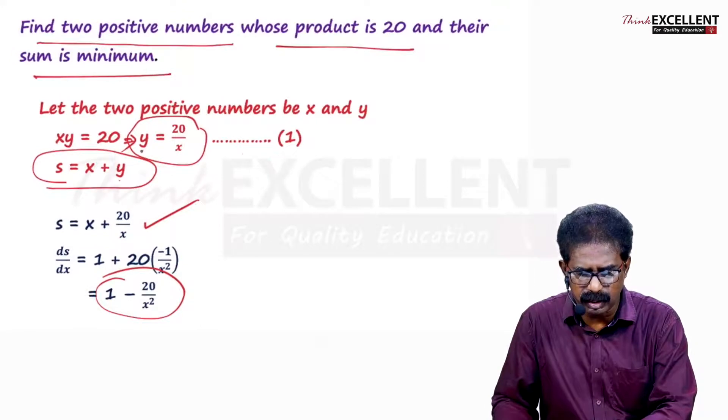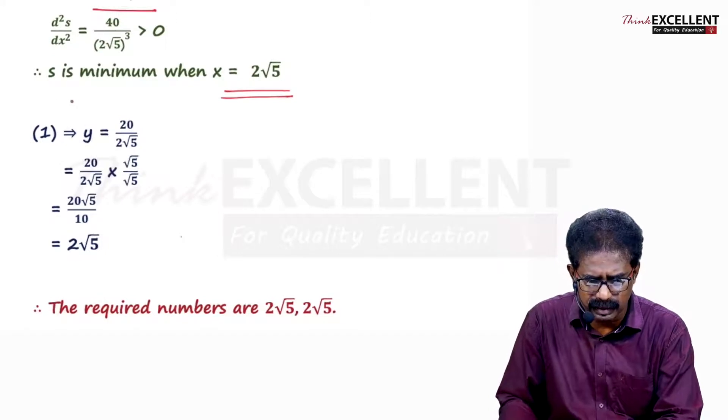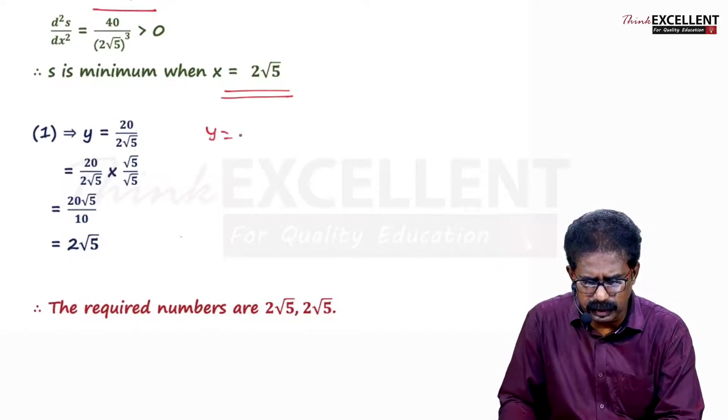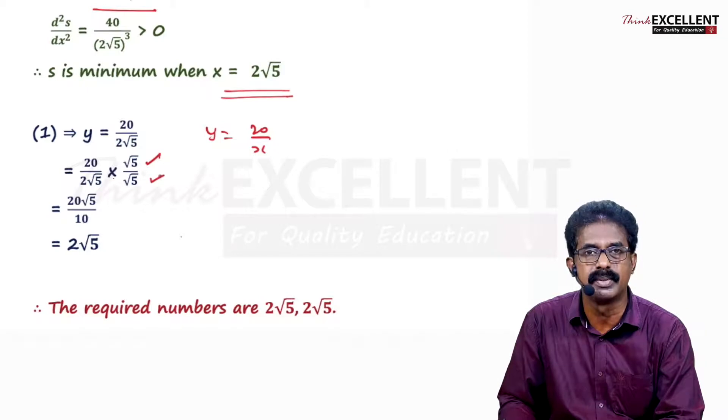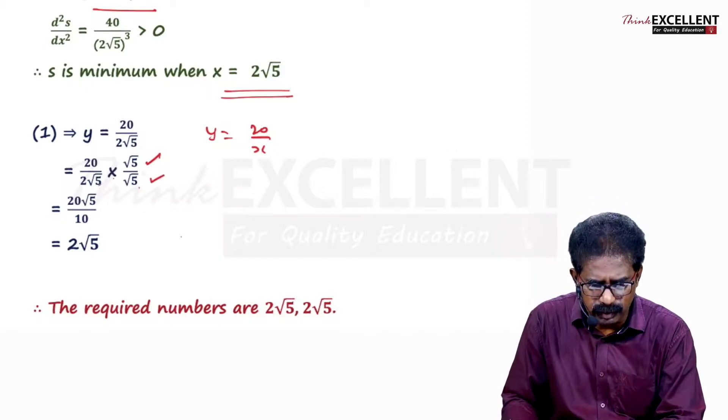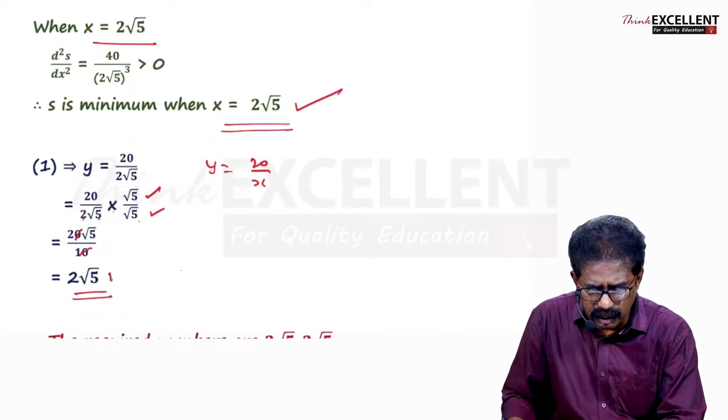For that you substitute in the first equation, y equals 20 by x. Instead of x you substitute 2 root 5. Rationalize it. Multiply numerator and denominator by root 5. See the denominator: root 5 and root 5 is 5. 5 to 10. 10 and 20 cancel. Your answer is 2 root 5. So x value 2 root 5, y value also 2 root 5.